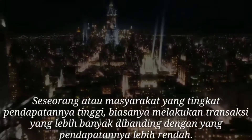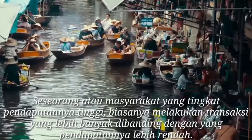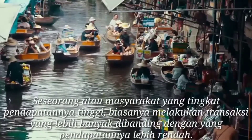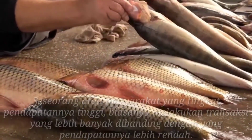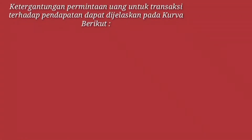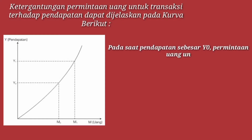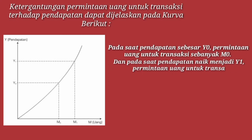Seseorang atau masyarakat yang tingkat pendapatannya tinggi, biasanya melakukan transaksi yang lebih banyak dibanding dengan yang pendapatannya lebih rendah. Ketergantungan permintaan uang untuk transaksi terhadap pendapatan dapat dijalankan pada kurva berikut. Pada saat pendapatan sebesar Y0, permintaan uang untuk transaksi sebanyak M0, dan pada saat pendapatan naik menjadi Y1, permintaan uang untuk transaksi sebanyak M1.